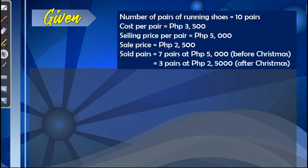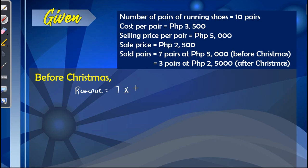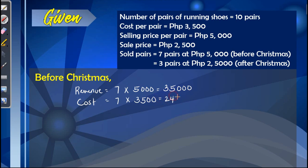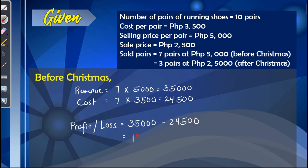To identify if there is a profit or loss, we need to identify first the profit before Christmas. The revenue before Christmas is 7 pairs times $5,000 per pair, which gives us a total of $35,000. The cost is 7 times the cost per pair of $3,500, which equals $24,500. To find profit or loss, we subtract revenue and cost: $35,000 minus $24,500 gives us $10,500.